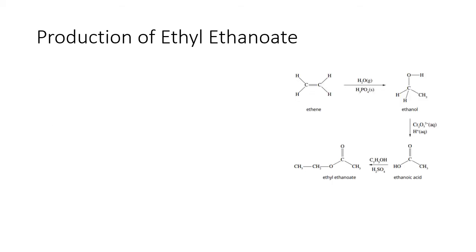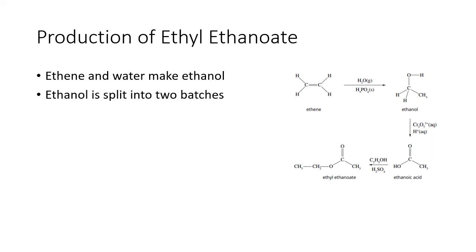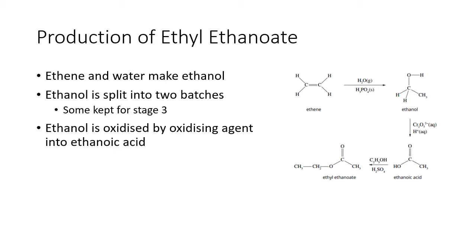So starting with ethene: you hydrate ethene to make ethanol, which you can watch in the production of ethanol video. The ethanol is then split into two batches — one batch is kept for stage three, and the other part is used in step two.